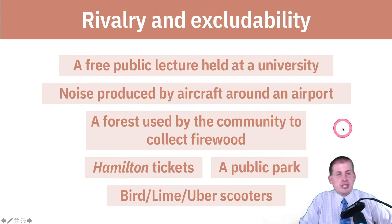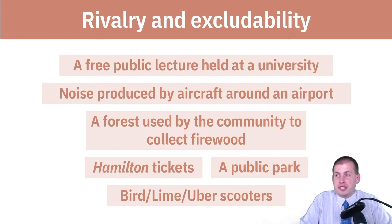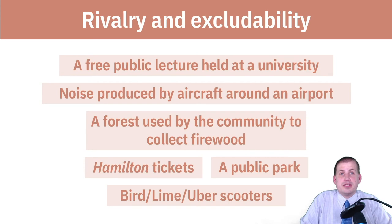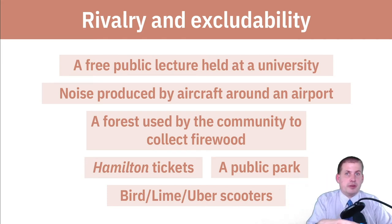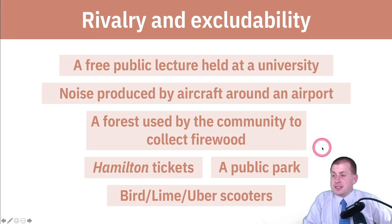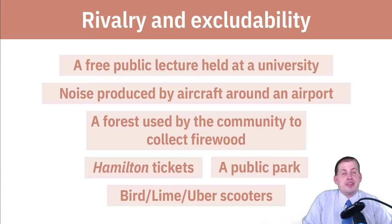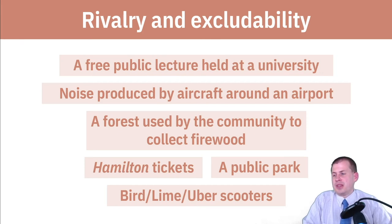A forest used by the community to collect firewood is a common pool resource. There's likely no fence or gate — it's non-excludable. But it is rivalrous: if too many people chop down trees, the forest disappears. Hamilton tickets, on the other hand, are a classic private good — rivalrous because one ticket purchase takes a seat from someone else, and excludable because without a ticket you can't get in.